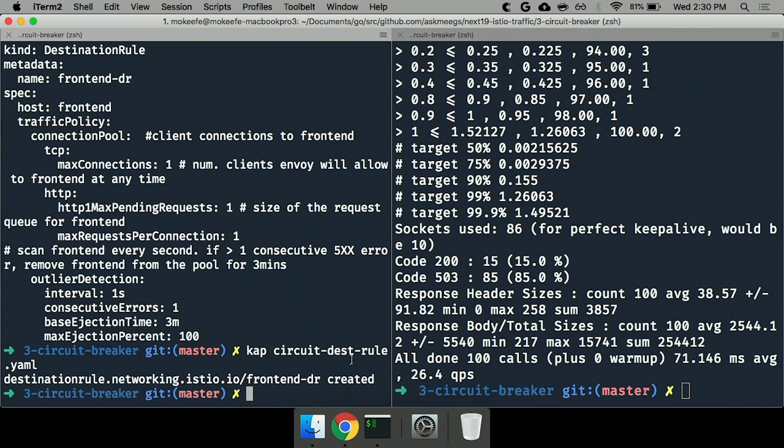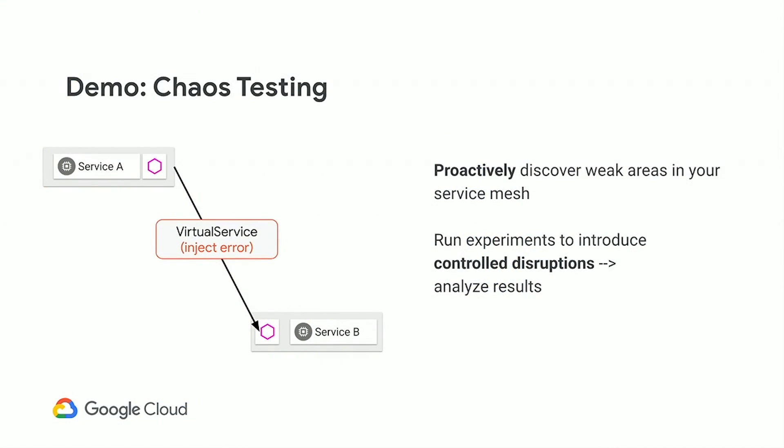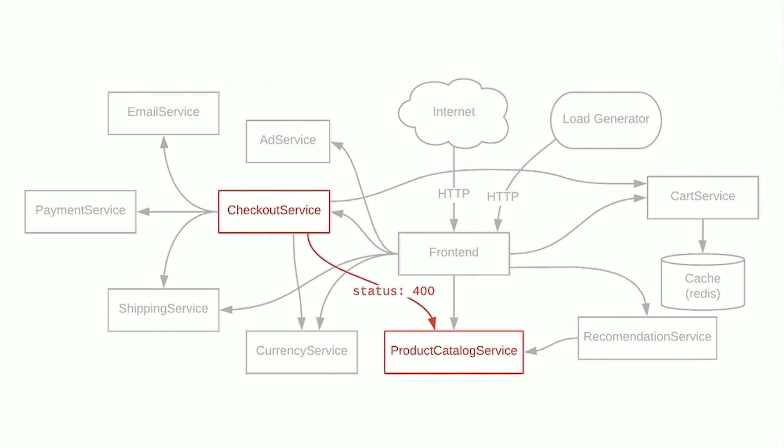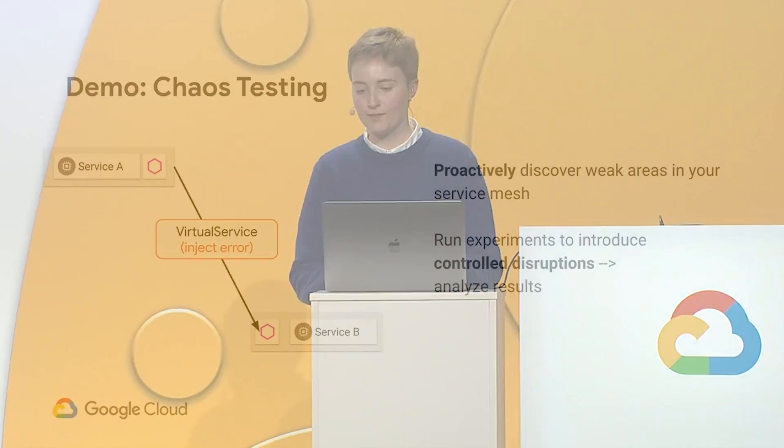The last demo in this traffic rules section is fault injection. Traditional unit, integration, and smoke tests cannot predict every failure case in your microservices — you'd ideally like a framework that prods at your mesh to find weak areas so you can build resilience. Istio allows you to inject faults into one edge in your topology. What we're going to do is inject an HTTP 400 bad request error in a specific connection between checkout and product catalog, while not touching requests going from frontend to product catalog.